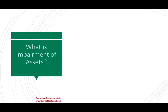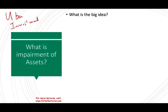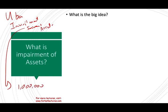Let's talk about impairment of assets. What is the big idea? Let's assume Uber — and this is what actually happened. Uber operates in London. Before they operate in a city, they have to make an investment. They might have to buy servers, buy other assets. Let's assume they bought one million euros worth of assets.